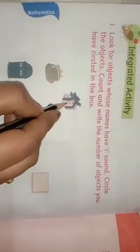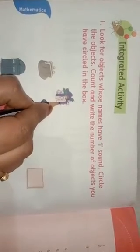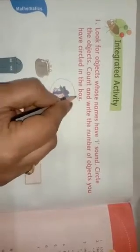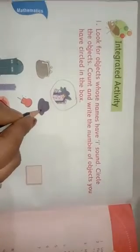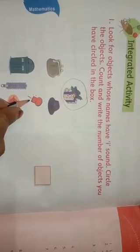What is this? This is gift. G-I-F-T gift. This is I sound, so we circle here. This is H-A-T hat. Hat is I sound? No. This is pin. P-I-N pin is also I sound, so we circle here.